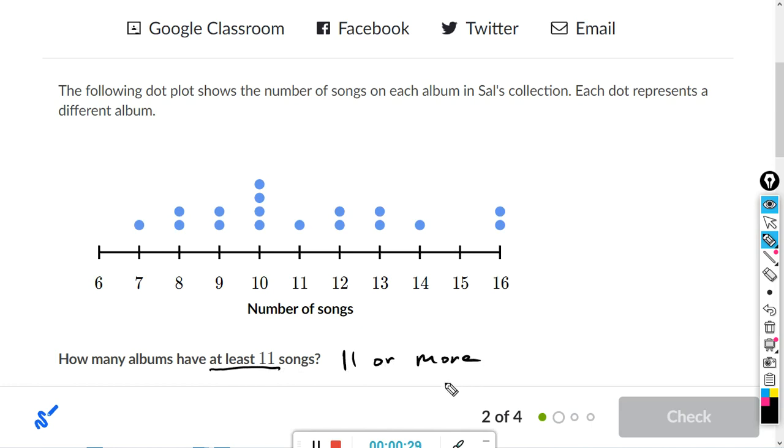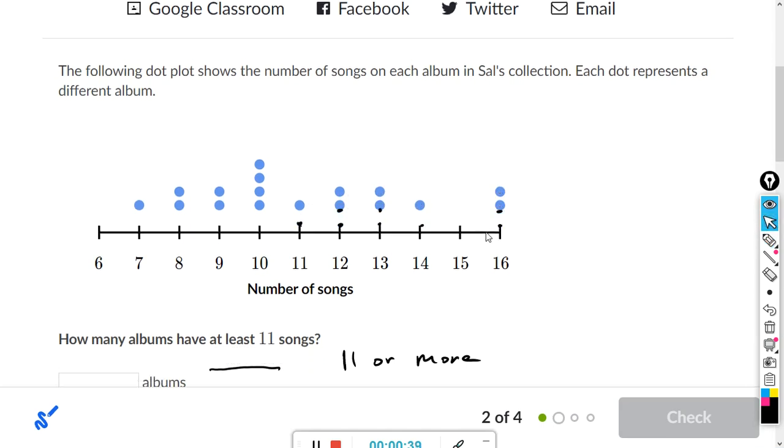All right, so we just count the dots: one, two, three, four, five, six, seven, eight. Okay, so it's just eight.